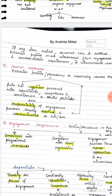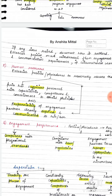Next is engagement performance. When you are executing the engagement, you need policies and procedures that reasonably assure that work is performed as per professional standards, that laws and regulations are complied with, and that reports issued are appropriate in the circumstances. The engagement partner's reports should be appropriate in the particular circumstances in which they are issued.